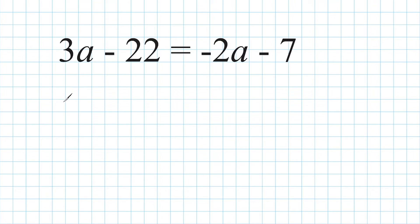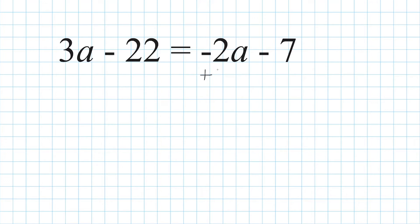Notice that we have a variable on the left-hand side of our equation and on the right-hand side of our equation. And whenever this is true, what you need to do is consolidate those variables together. In other words, we're going to take one of the a terms and move it on the other side of our equation to combine it with the other a term.